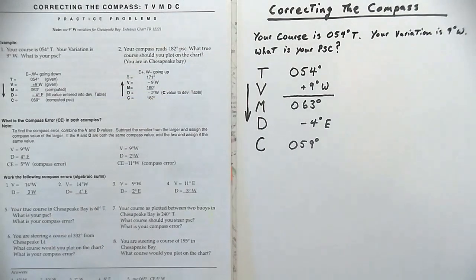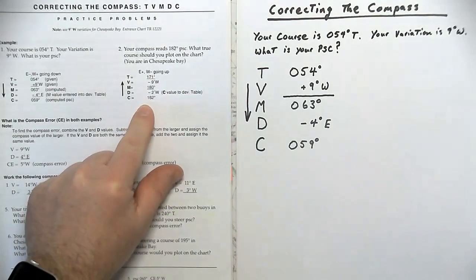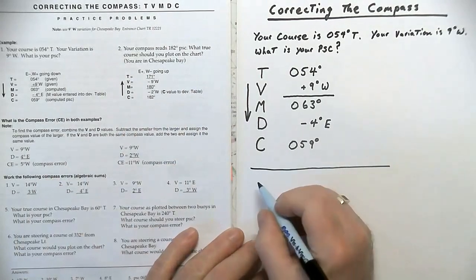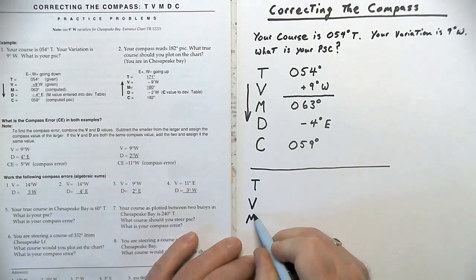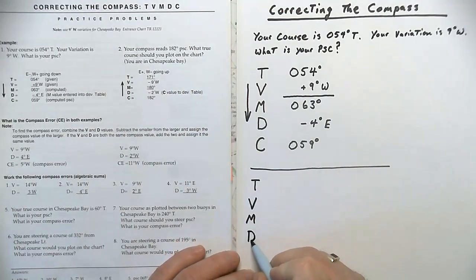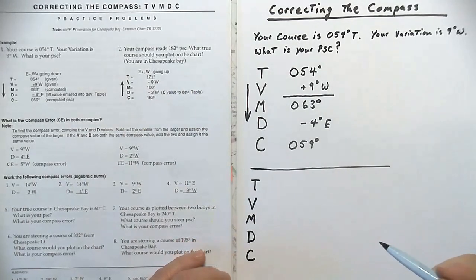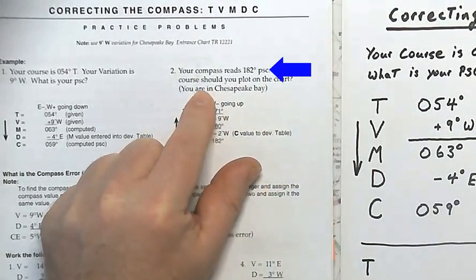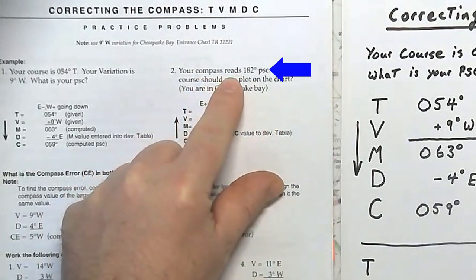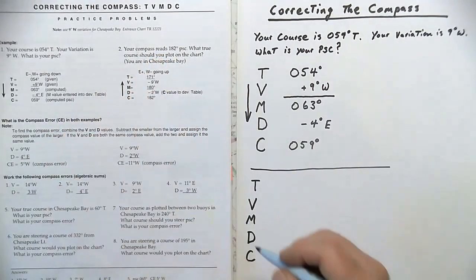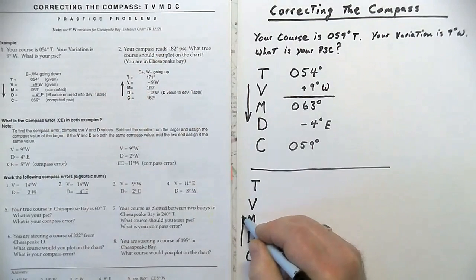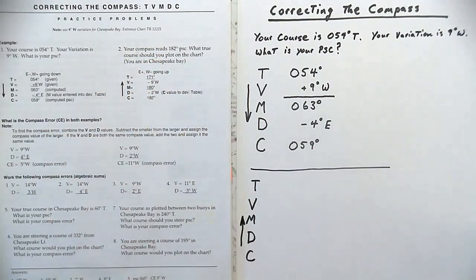Now let's take an example where we work the TVMDC formula upward, as is the case in problem number two. As always, we start by very cleanly writing out our TVMDC formula. Now, in problem number two, we are given a compass course. So this means that we need to start at the bottom and work our way to the top. You can use an arrow on the side as a little reminder.